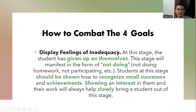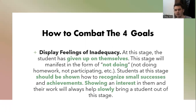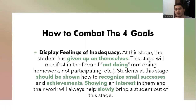For the last goal — displaying feelings of inadequacy — in this stage your student gives up on themselves, meaning they're not going to do anything in the classroom, not going to participate or do their homework. What you can do is try to make them recognize that achieving small things is also a great success. By showing them interest and helping them recognize these small achievements, they are going to get out of this stage slowly but surely.